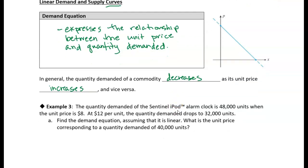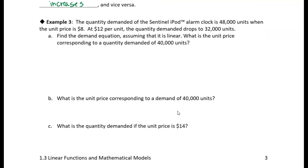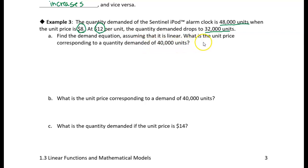Let's take a look at example three. We're manufacturing sentinel iPod alarm clocks. The quantity demanded is 48,000 units when the price is $8. When the price is $12, the quantity demanded drops to 3,200 units. We're asked first to find the demand equation assuming it's linear, and then to find the price corresponding to a quantity demanded of 40,000 units.